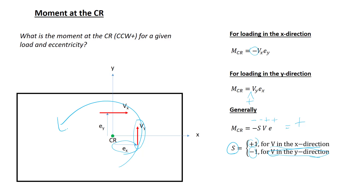We now have two expressions. One gives us the magnitude and direction of the moment at the center of rigidity given a story shear. The other gives us the magnitude and direction of the forces in the SFRS components given a moment at the center of rigidity. Next, we'll apply this concept to the actual example we're working on.